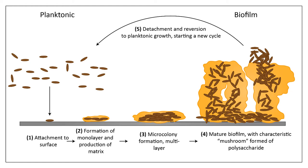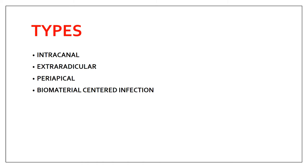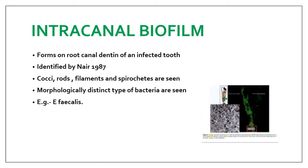There are four types of biofilm. The first is intracanal biofilm - formed on the root canal dentine of an infected tooth, adhered to the dentine of the root canal. It was first identified by Nair in 1987. Various cocci, rods, filaments, and spirochetes are present, with distinct bacterial types. The most common microorganism in intracanal biofilm is Enterococcus faecalis.